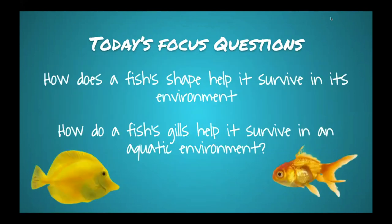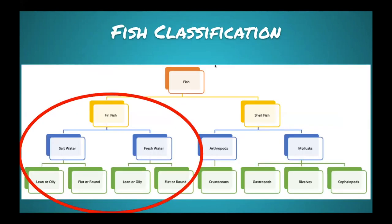First, fish classification. There are about 33,000 different types of fish; we're only talking about fish with fins. Fish classifications include fin fish and shellfish. Shellfish includes crustaceans, arthropods, bivalves, cephalopods — all the mollusks, snails, octopus, sea slugs, crabs. We're going to focus on fish with fins, which includes both saltwater and freshwater fish.